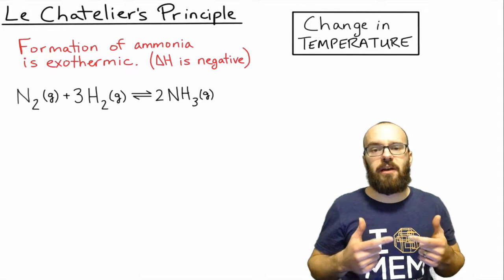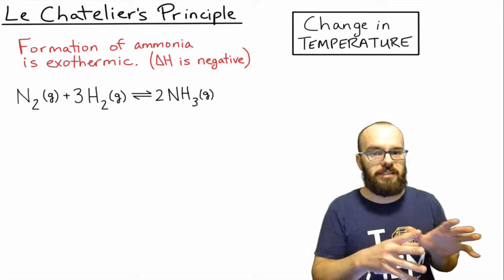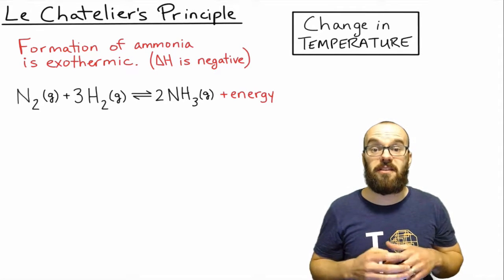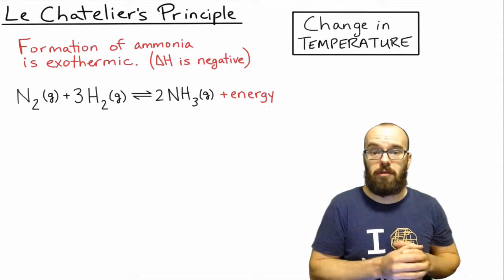In this case, if we have an exothermic reaction, that means that this reaction is releasing energy to its surroundings. That's going to mean that energy, in this case, is a product of the forward reaction.